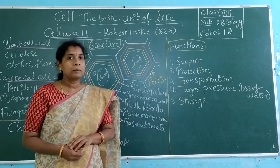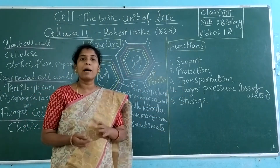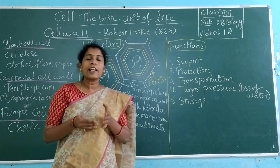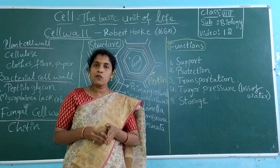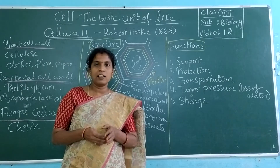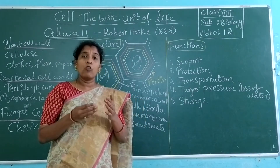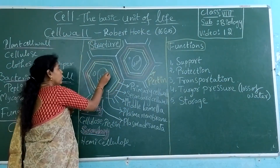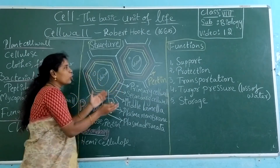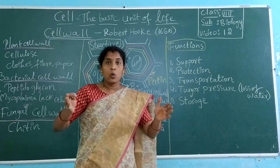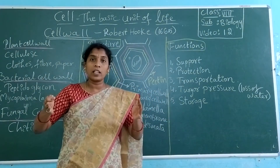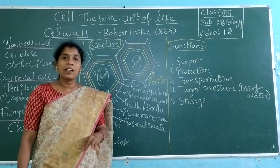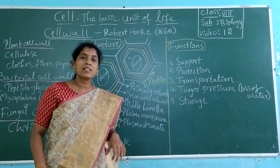The cell wall also manages turgor pressure — this is very important. The loss of water is protected by this pressure. Generally, the plant cell has a vacuole inside. In the cytoplasm, there is an empty space called a vacuole, which is filled with water. When there is a heavy amount of water stored in the vacuole, the size of the vacuole starts expanding, and pressure builds up in the cell.